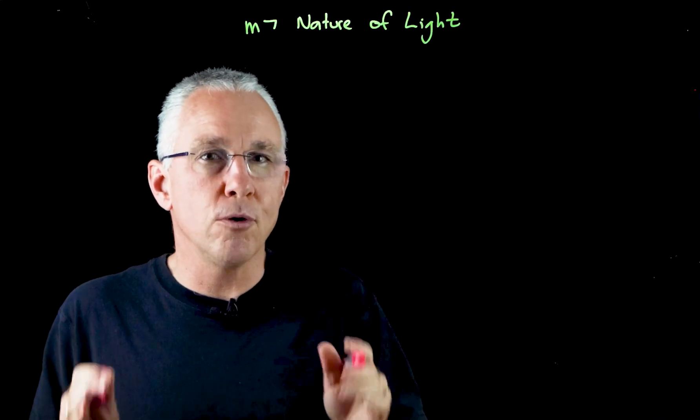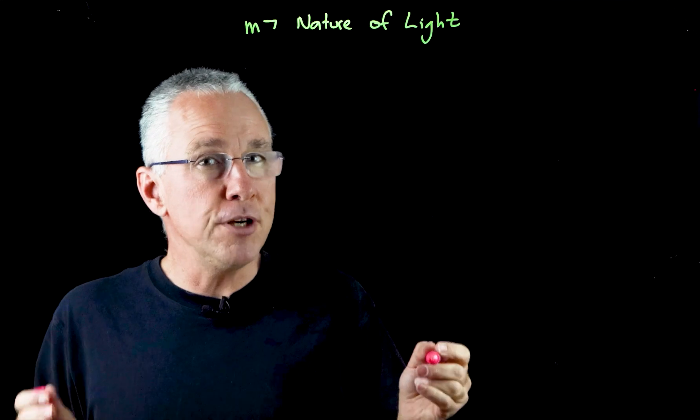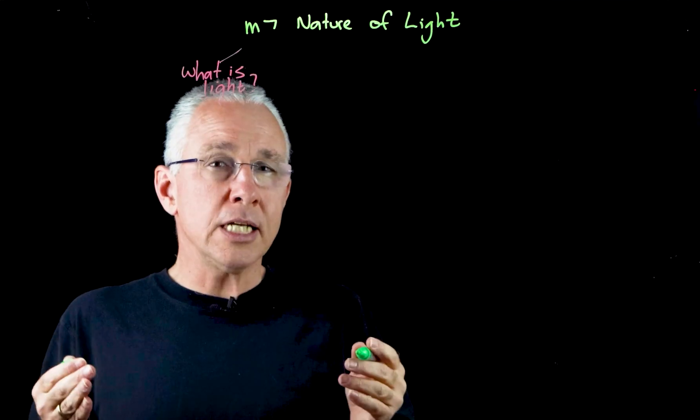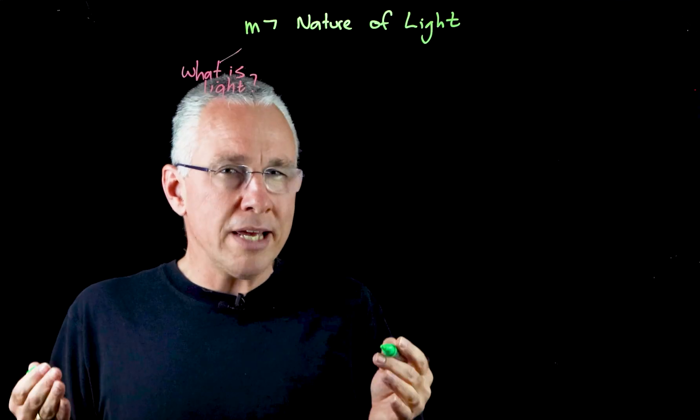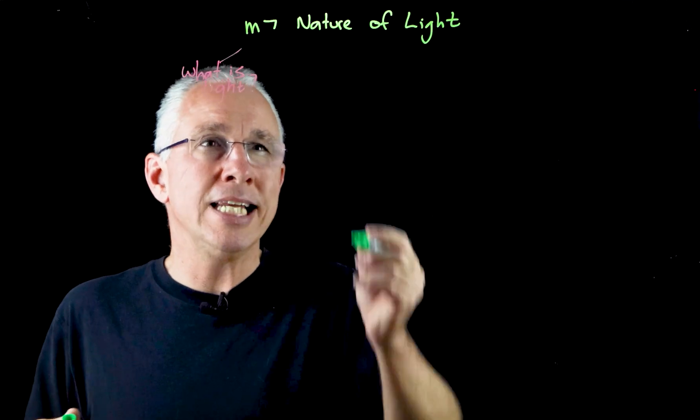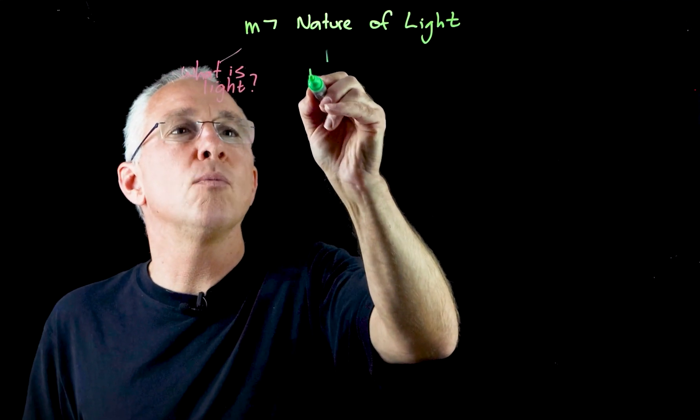This module is divided into four inquiry questions. The first one is: what is light? The second inquiry question says: what evidence supports the wave model of light and what predictions can be made using this model? In essence, we're interested in the wave model.